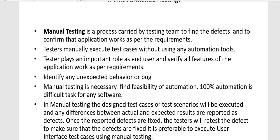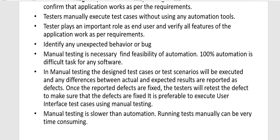In manual testing, the designed test cases or test scenarios are executed and any differences between actual and expected results are reported as defects or bugs. Once the reported defects are fixed, the tester will retest to make sure the defects are fixed. You go through the bug cycle of posting a defect, developers fix it, and then you retest it — all done in manual testing.